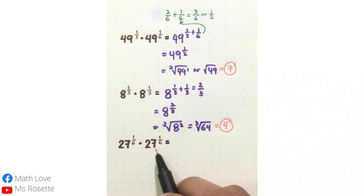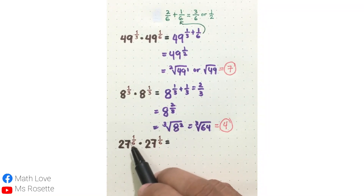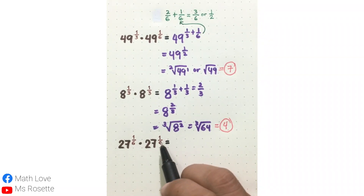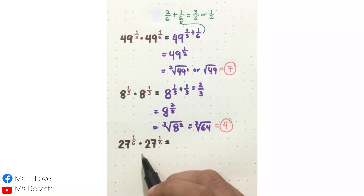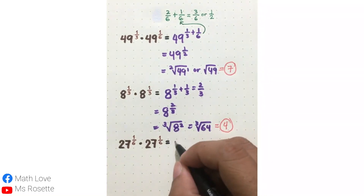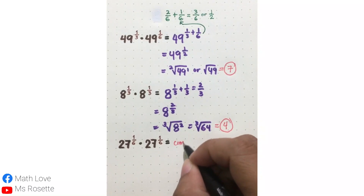Now let's see this one: 27 raised to 1 sixth times 27 raised to 1 sixth. Try to answer this and comment your answer below.